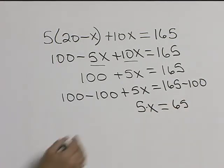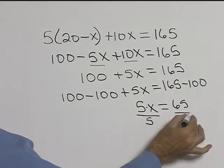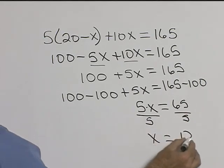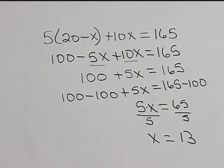Well, 5 is being multiplied by x, so we'll divide both sides by 5 and x is 13. So solving this equation we get x to be 13.